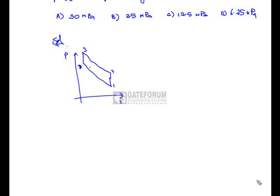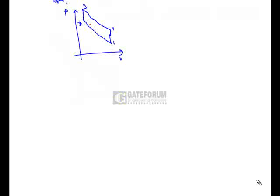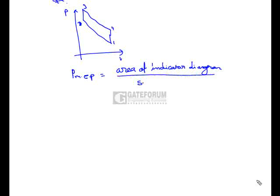The indicated mean effective pressure is defined as the ratio of the area of the indicator diagram (work done) to the swept volume. With area = 12.5 kJ and swept volume = 0.25 m³, the mean effective pressure = 12.5/0.25 = 50 kPa. The correct answer is option A.